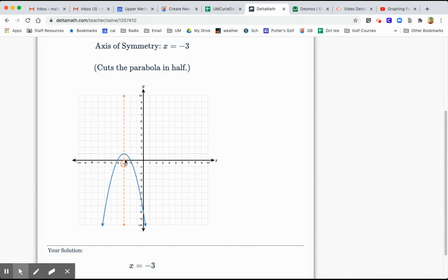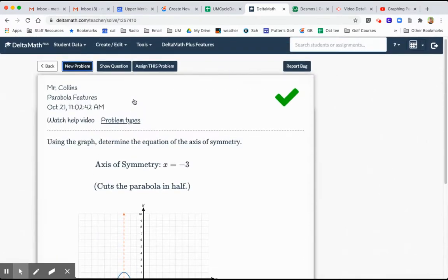And then here, they kind of show what the axis of symmetry is. The vertical line x equals negative 3. And yes, it does cut the parabola in half.